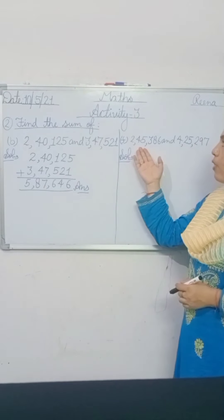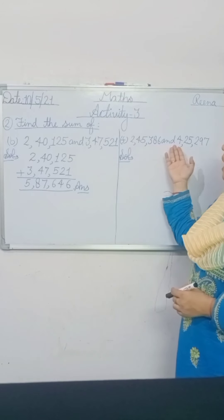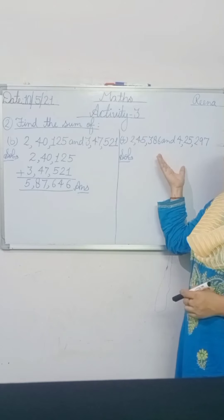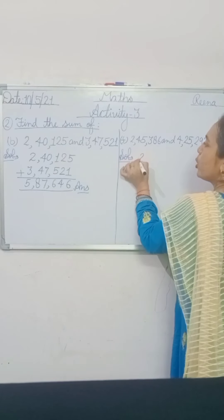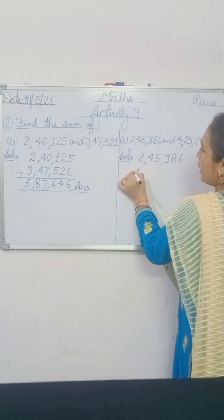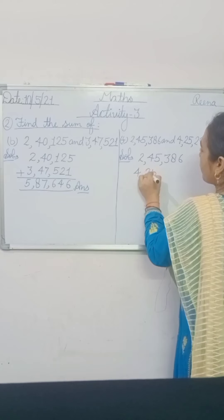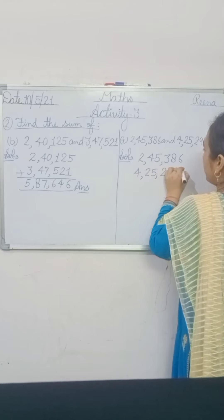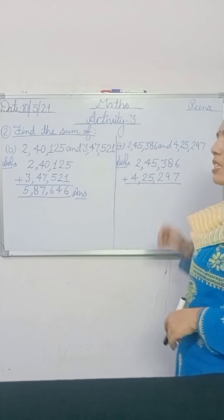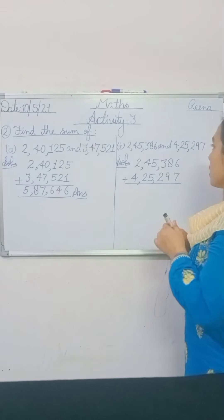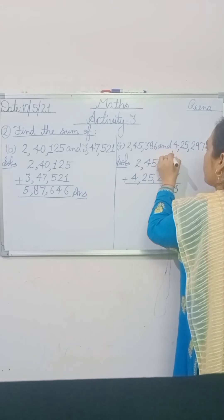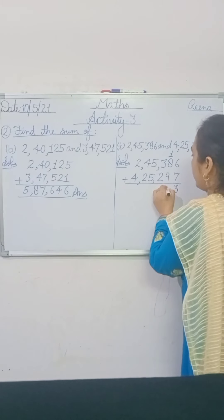Now part F is 2,45,386 and 4,25,297 — find the sum of the given numbers. In the solution, write 2,45,386 and then write the second number 4,25,297. Now add your numbers. 6 plus 7 is 13 — write 3 and 1 is carry. 8 plus 9 is 18 — that means write 8 and carry 1.